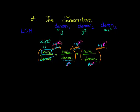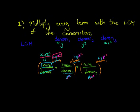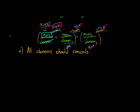So in the end what you actually multiplied with was the LCM. Once you have multiplied every term by the LCM, all denominators should cancel. If you end up with more denominators than you started with, something went wrong. After everything cancels, simply simplify and solve as usual.